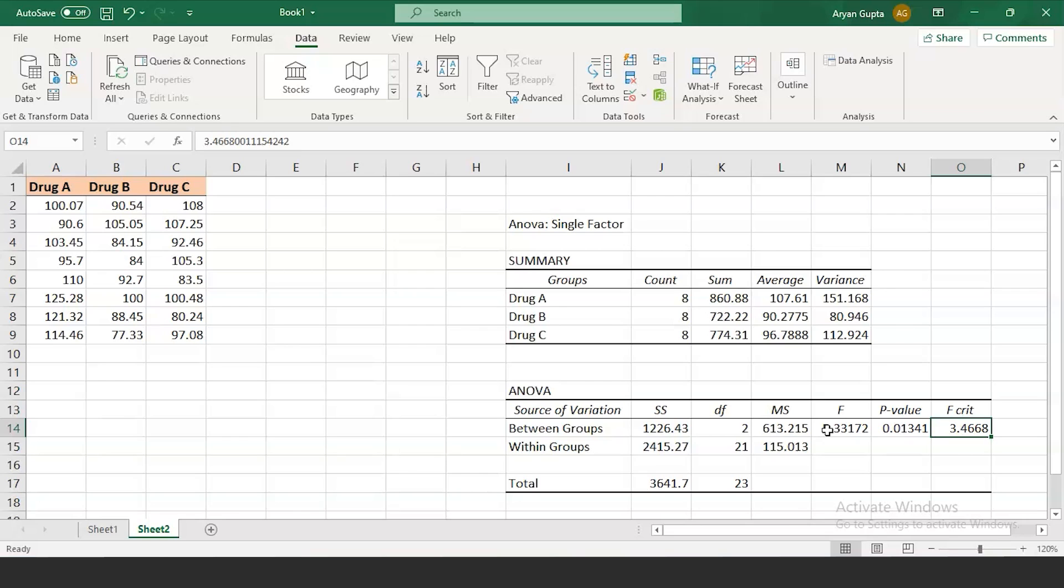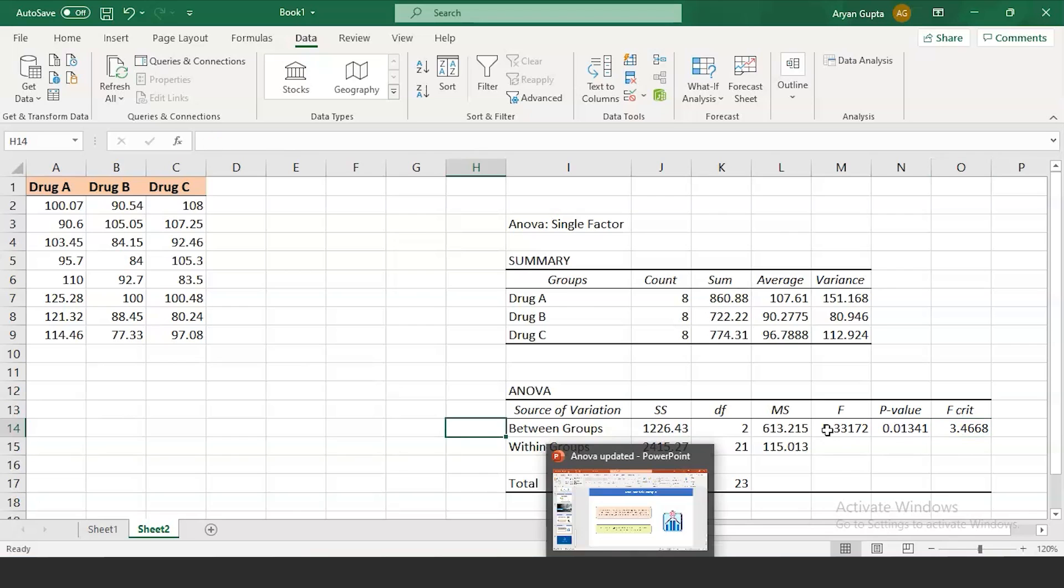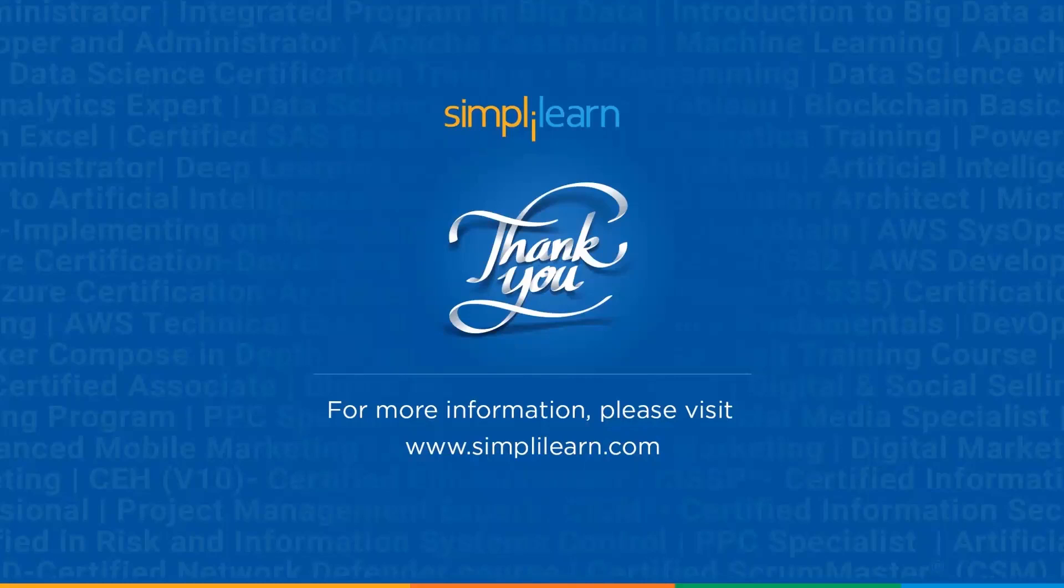It also means that the average time taken to cure the disease is not the same for all the three drugs. Using the paired comparison, we can conclude that the time taken by drug A to cure the disease is more than time taken by drug C and, further, is more than time taken by drug B to cure the disease. That's all about the ANOVA. I hope after this video, we will have a clear understanding of what an ANOVA is and what is the concept behind it.